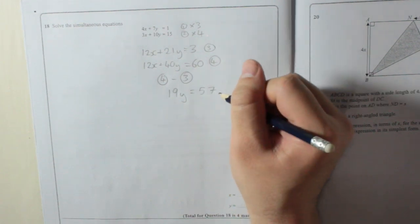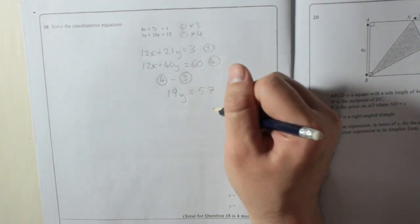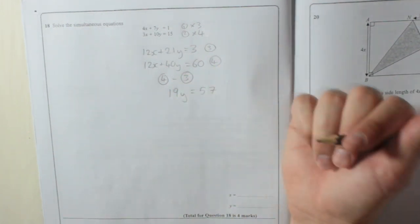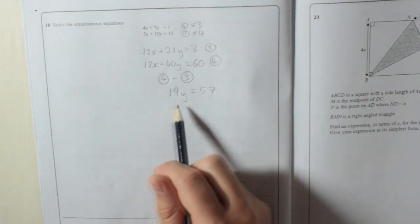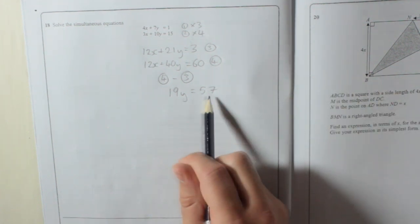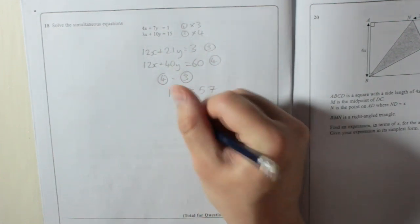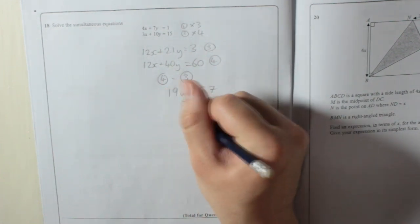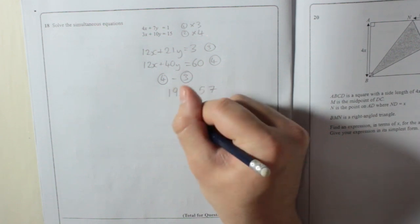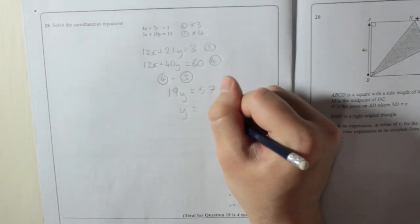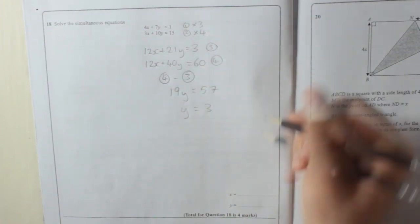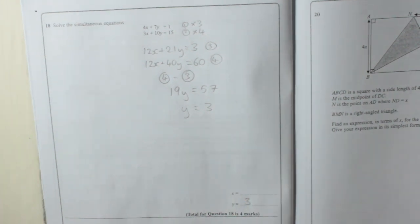So if 19y equals 57, this might throw a lot of people—they might think 'I don't know my 19 times tables'—but 19 does actually go into 57 three times. So 19y divided by 19 is y. How many 19s in 57? Three. So y equals 3. We've got one part.